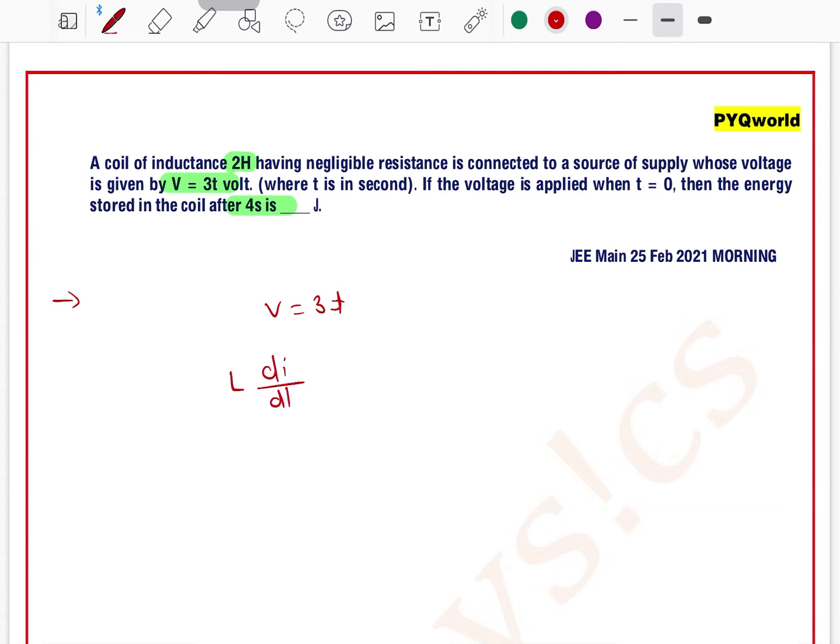Now we know that voltage across an inductor can be written as L di/dt equals 3T. So we can solve this by variable separation. L di equals 3T dt, where L value equals 2 Henry. If we integrate...